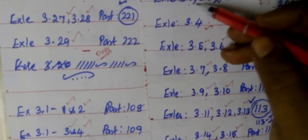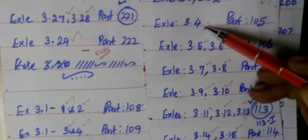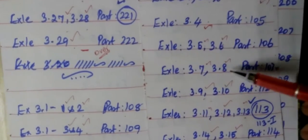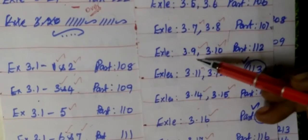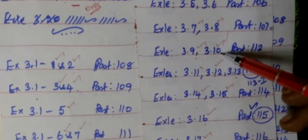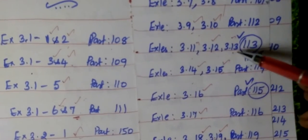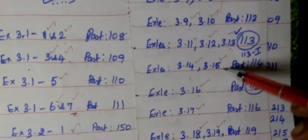So, example 3.1, 3.2, then 3.3, 3.4, 5, 6, 7, 8, then 3.9, 3.10, then 11, 12, 13, 14, 15, 16.